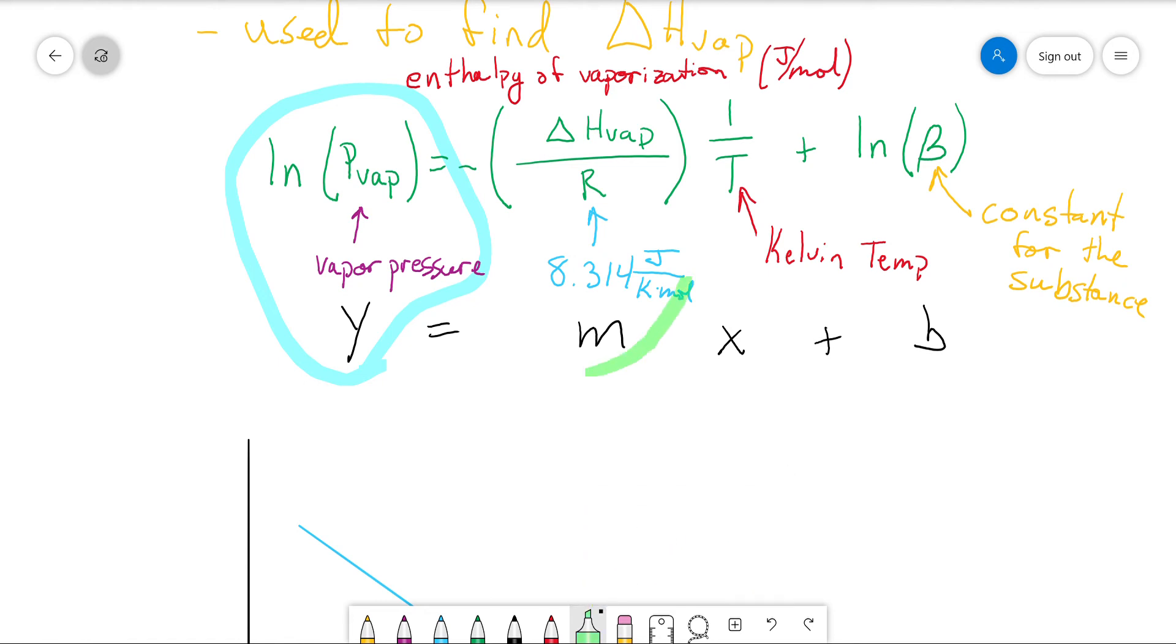The M, which is the slope, is negative delta H vap over R. X is 1 over T. And then B is natural log of beta.